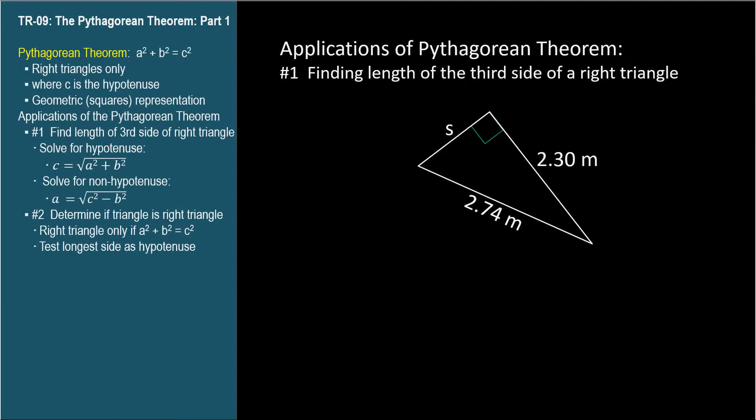Since the hypotenuse squared equals the sum of the other two squared, a short side squared is the difference between the square of the hypotenuse and the square of the other side. So s squared equals 2.74 meters squared minus 2.30 meters squared. s equals the square root of this difference.